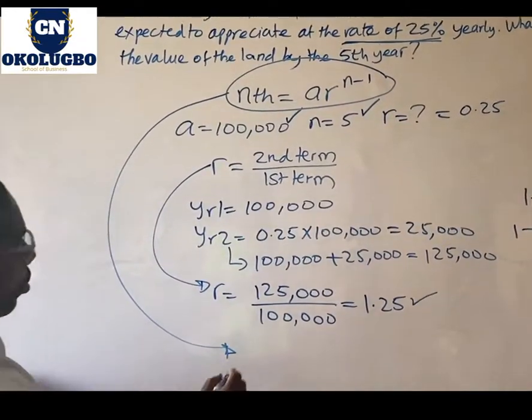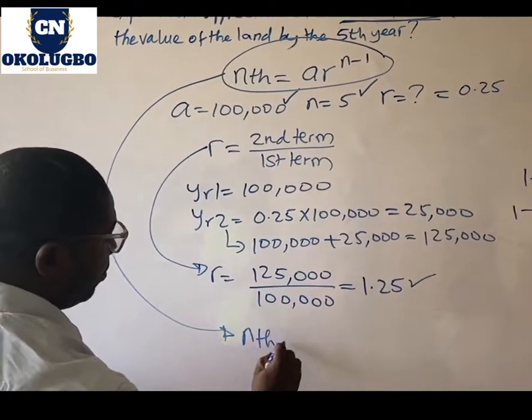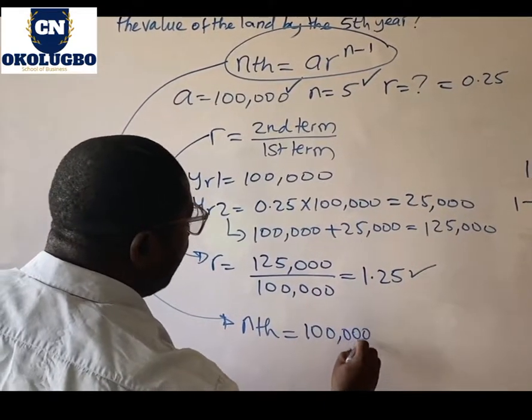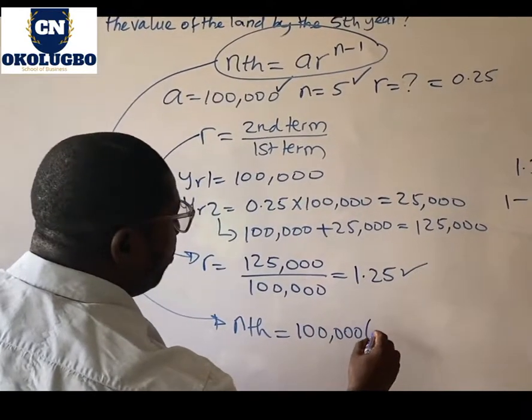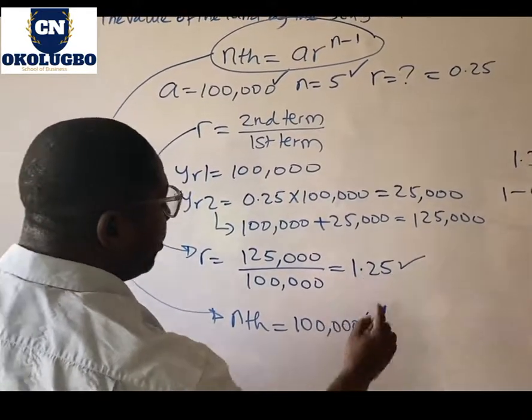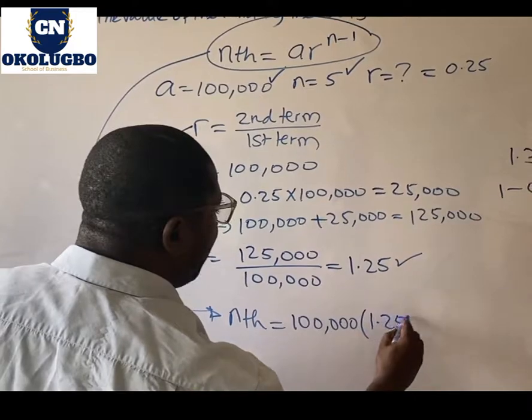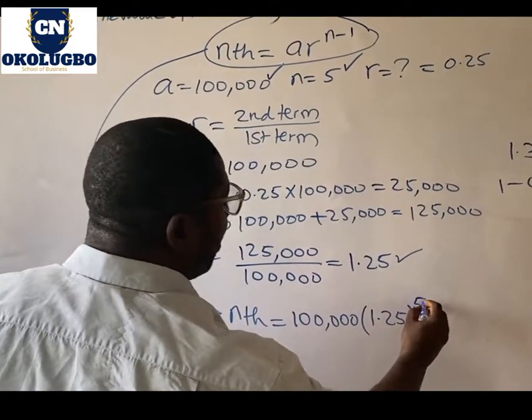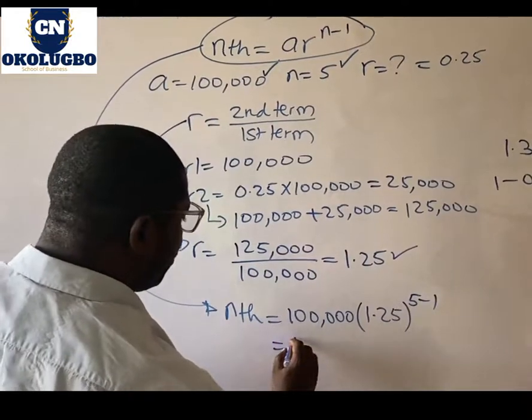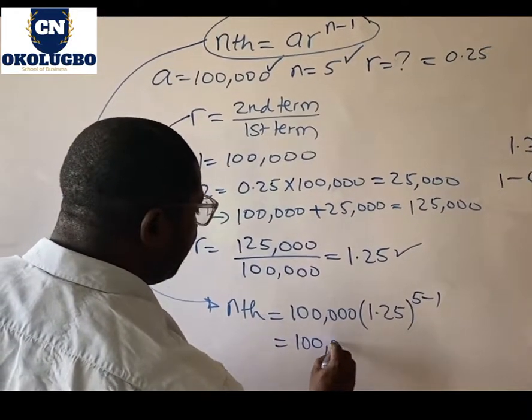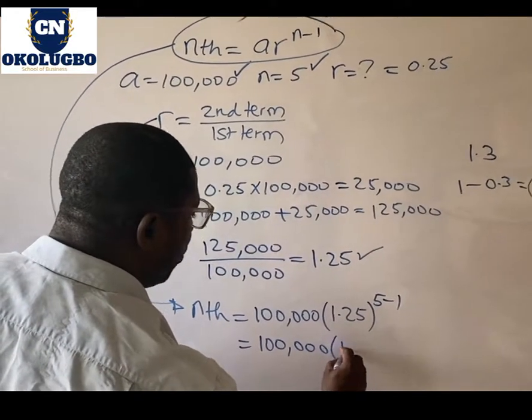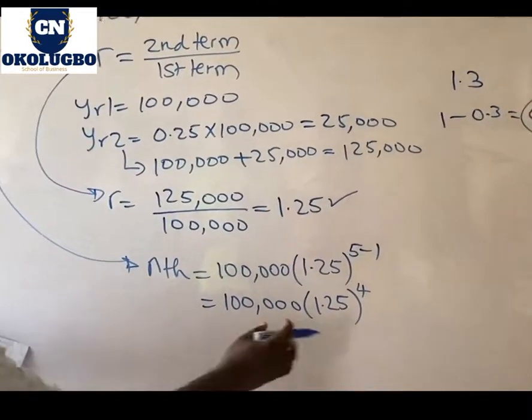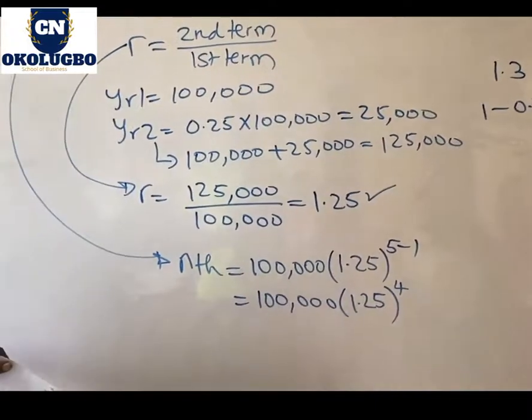Follow me. So the nth term will be 100,000, which is A, multiplied by R is 1.25 raised to power 5, which is n minus 1. So this becomes 100,000 times 1.25 raised to power 4.